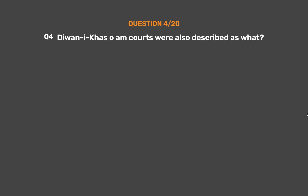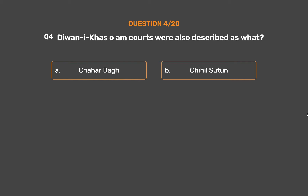Question No. 4: Diwan-i-Khas and Diwan-i-Aam courts were also described as what? Option A: Chahar Bagh. Option B: Chihil Sutoon. Option C: Pishtaq. Option D: None of these.